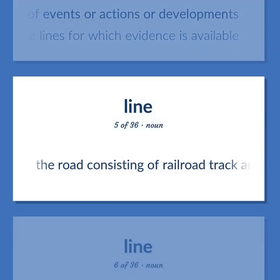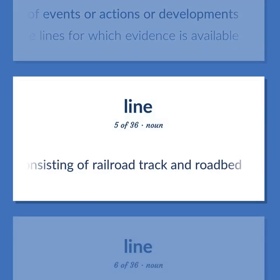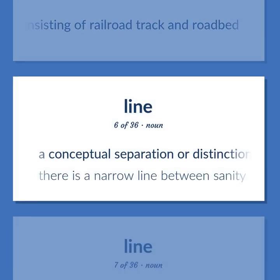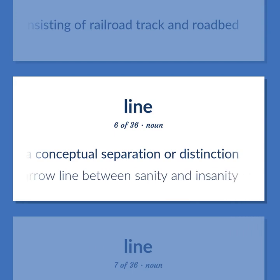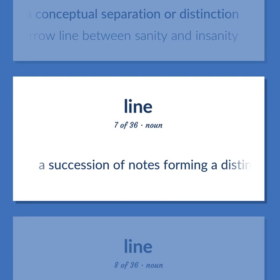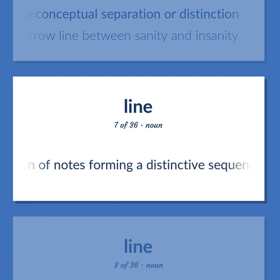The road consisting of railroad track and roadbed. A conceptual separation or distinction. There is a narrow line between sanity and insanity. A succession of nodes forming a distinctive sequence.